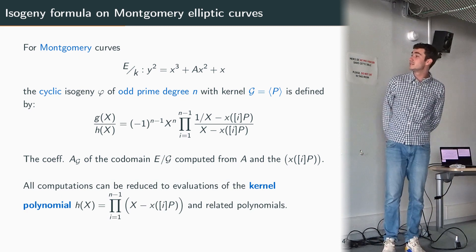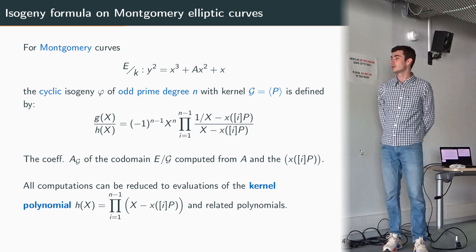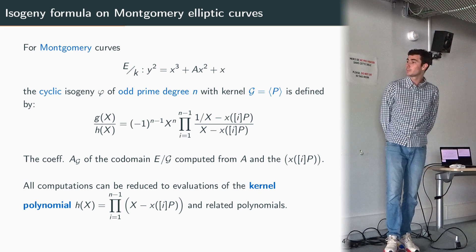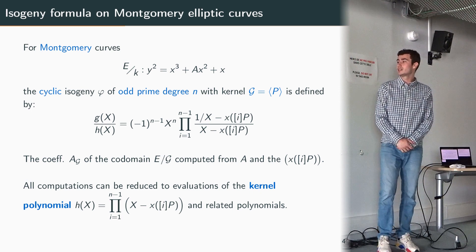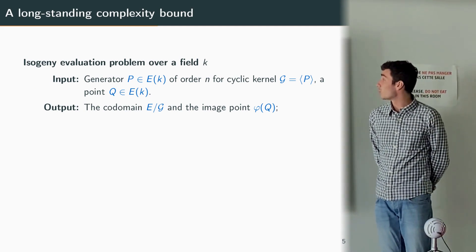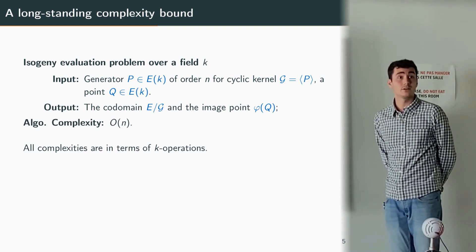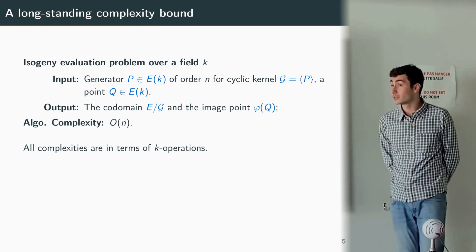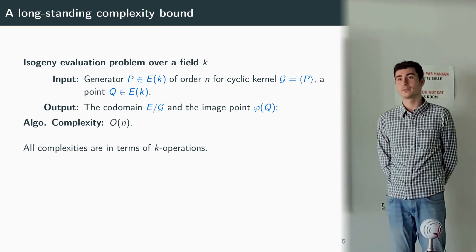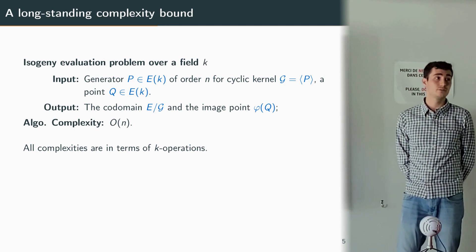I think this formula already gives the intuition, but in fact all the computations can basically be reduced to evaluations on several values of these kernel polynomials h whose roots are the x-coordinates of the scalar multiple of the generator P. So evaluation of these polynomials and also some related polynomials such as its derivative. This first remark gives quite a naive algorithm to solve our isogeny evaluation problem by computing naively the different evaluations of our polynomial, and so this gives a linear complexity in n. All the complexities in this talk are expressed in terms of arithmetic operations over the field k, and as such what I'm going to say is true for any field, but of course in practice we are going to use it for finite fields.